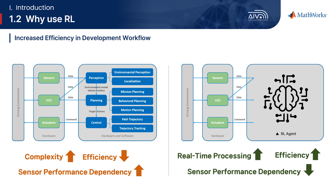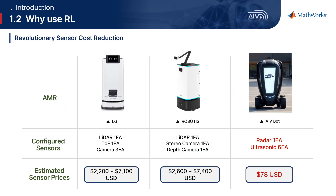Developing driving algorithms by directly processing sensor data involves high development complexity, resulting in low efficiency and a high dependency on sensor performance. In contrast, the reinforcement learning approach primarily focuses on designing the environment and reward function for training the agent, offering higher real-time processing efficiency and comparatively lower dependency on sensor performance. Additionally, the estimated sensor costs for commercial AMRs are typically in the range of several thousand dollars. To address this, our team envisioned an AMR that significantly reduces sensor costs by utilizing only radar and ultrasonic sensors.